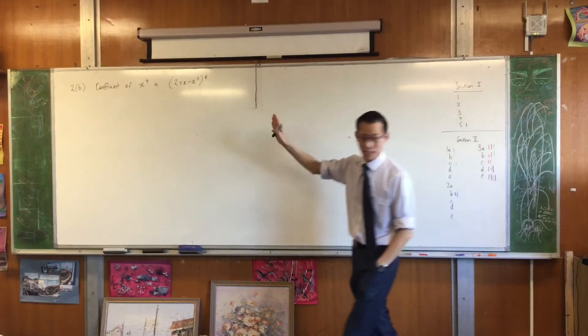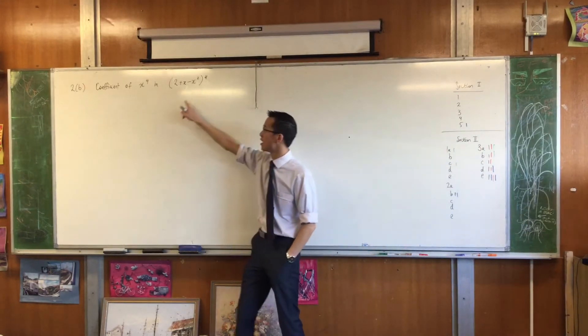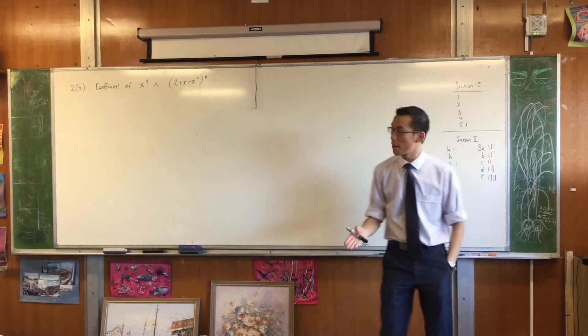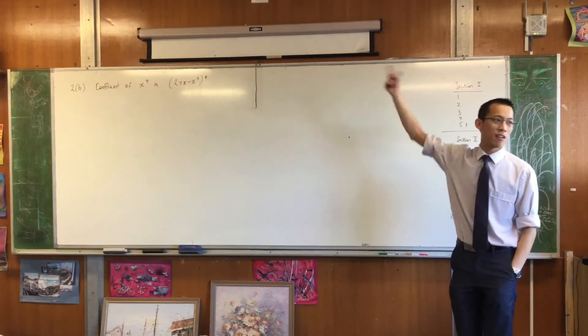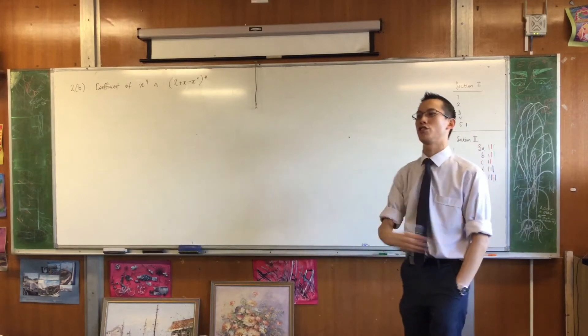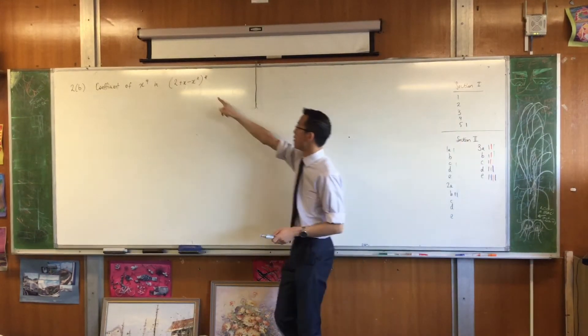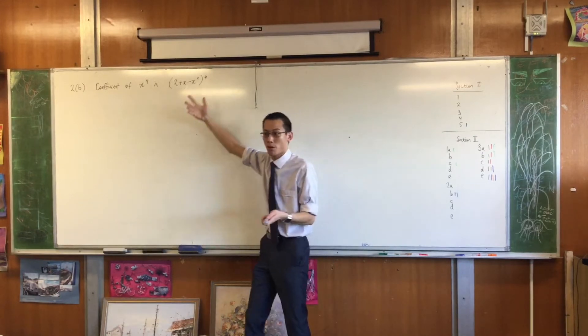You can see the clear clue that this is a binomial theorem question is, number one, it's asking about coefficients. Coefficients, that's what binomial theorem is all about. And secondly, look at that power of it. The power of four, clearly they don't intend for you to just expand the whole thing out.